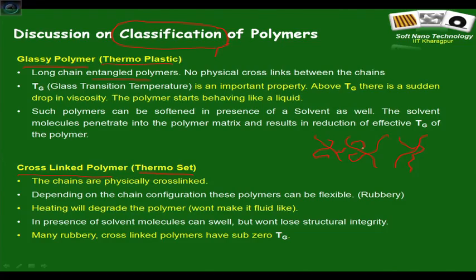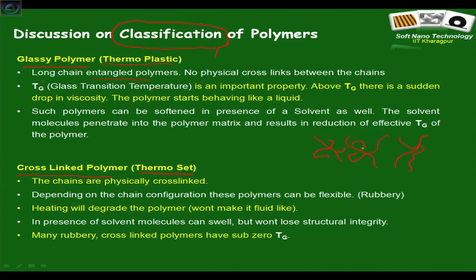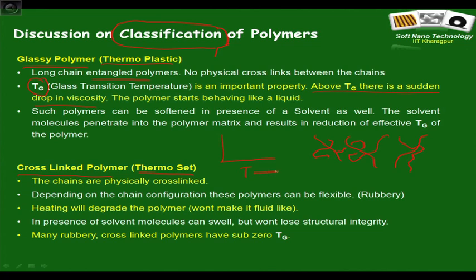Higher molecular weight means longer chain lengths, higher steric interaction, and that is manifested as higher viscosity. Many of these polymers — like the cover of a pen or components in daily life — behave like solids at room temperature because they have a specific property called the glass transition temperature (Tg). Below Tg, viscosity is extremely high so the material does not flow and behaves like a solid. If you slowly heat a polymer and record its viscosity, you see a sudden drop at Tg.